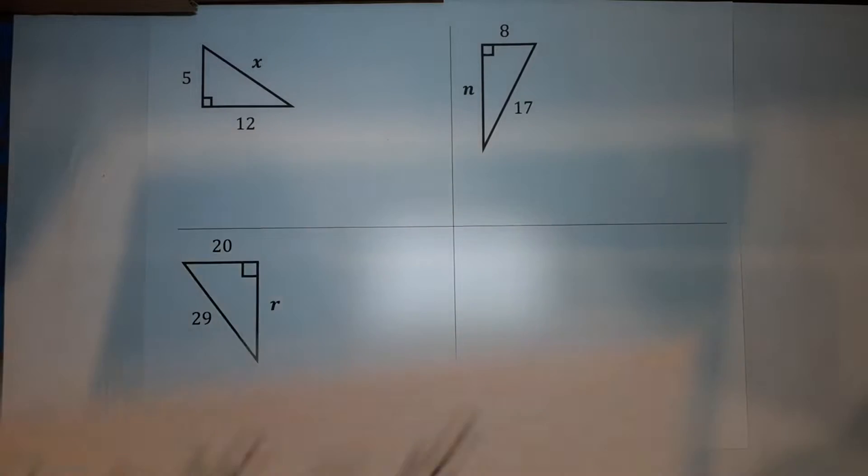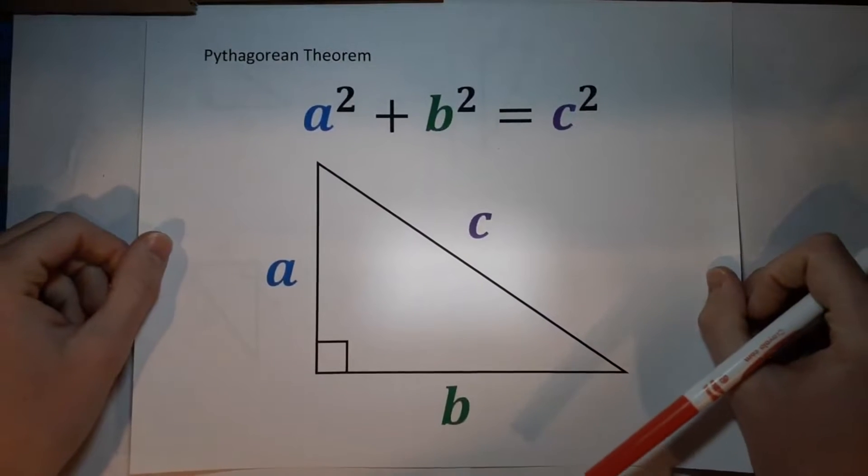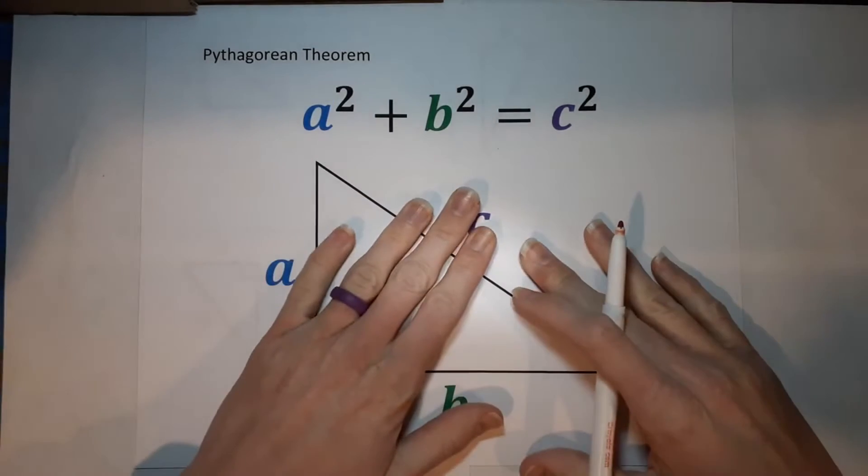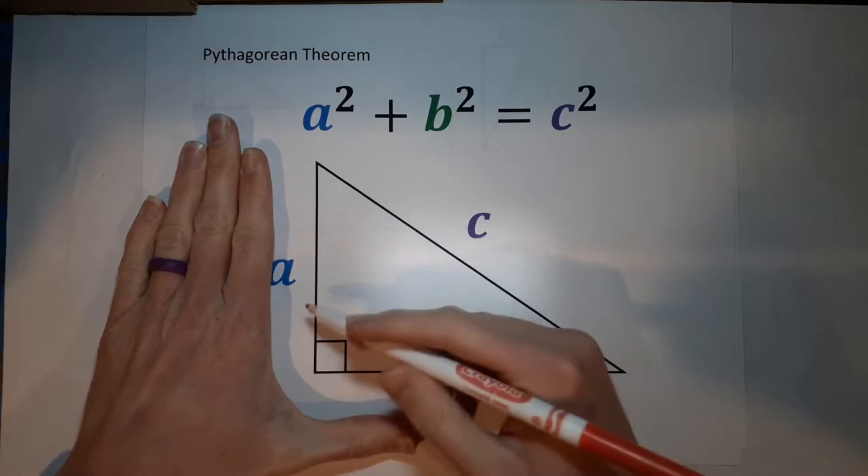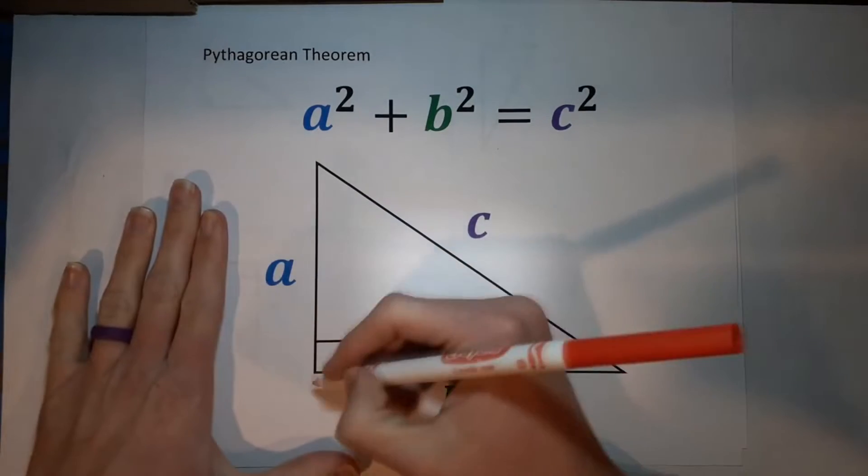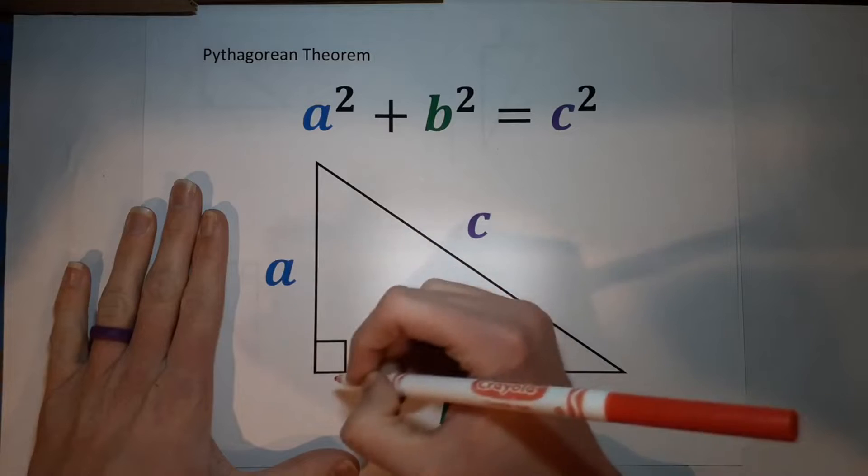I'm sure you've heard it before. A squared plus B squared equals C squared. We are working with right triangles. What's a right triangle? Right triangle has a 90 degree angle, which means it's a perfect corner, right? Perpendicular.